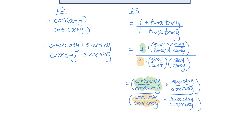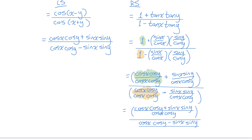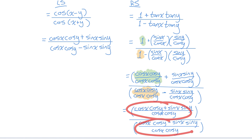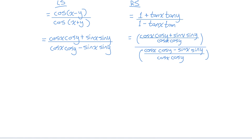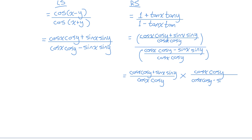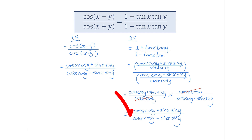The fractions in the numerator that are being added share a common denominator, so I can write them as a single fraction. I can do the same with the fractions in the denominator. When you have a fraction divided by a fraction, we multiply by the reciprocal of the fraction in the denominator. Now you can see that the factor of cos x cos y can be divided by the factor of cos x cos y to equal one — those factors cancel. What we're left with is exactly what's on the left side of the equation, so this equation is an identity — it's been proven.